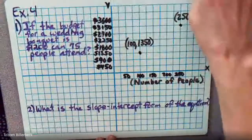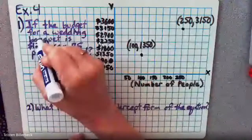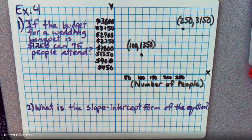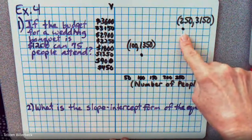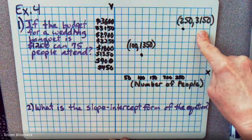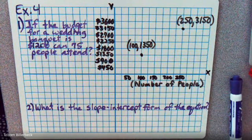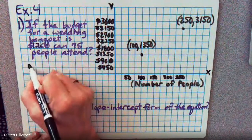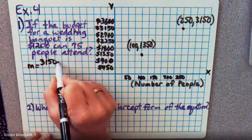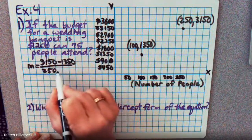So let's look at the last problem. If the budget for a wedding banquet is $1,200 — can 75 people attend? The banquet hall says that for 250 people it costs $3,150, and for 100 people it costs $1,350. So with that in mind, let's find the slope. We have slope equals 3150 minus 1350 over 250 minus 100.